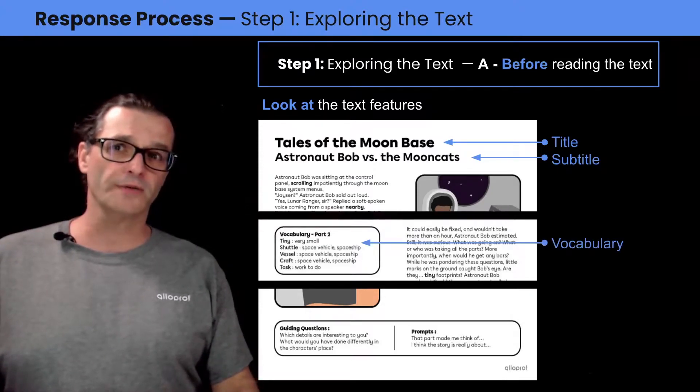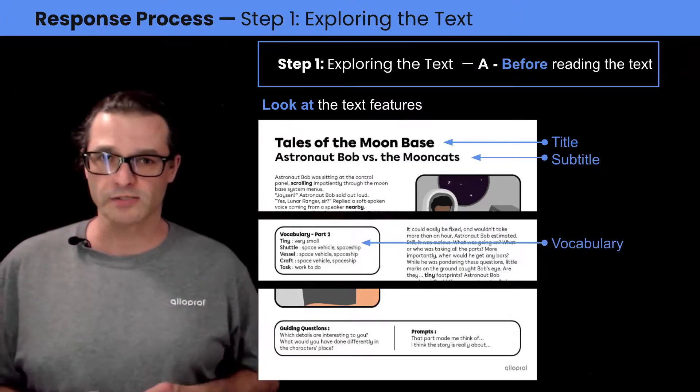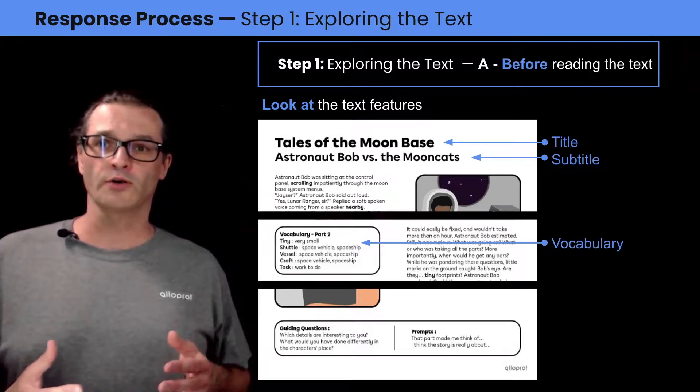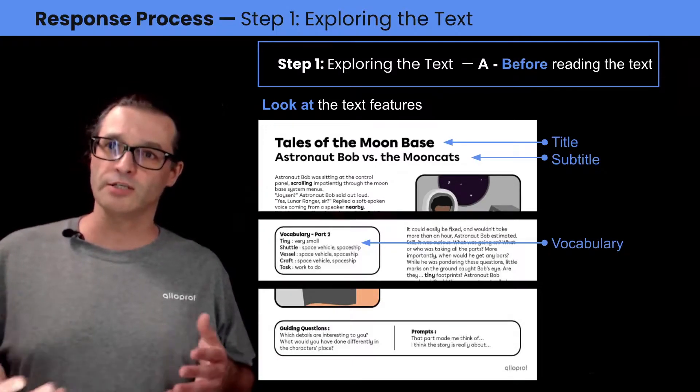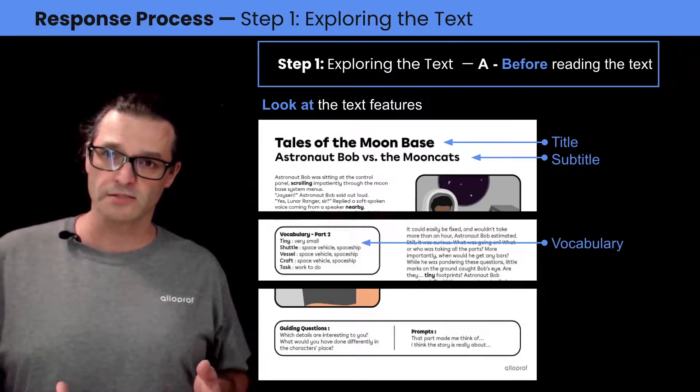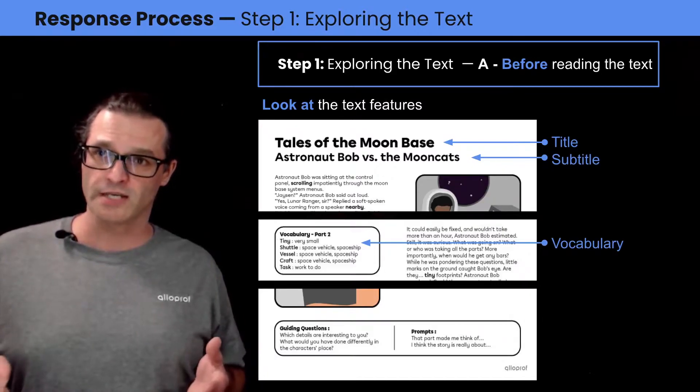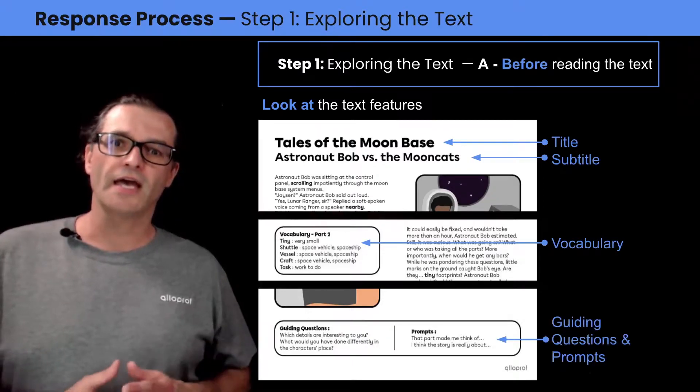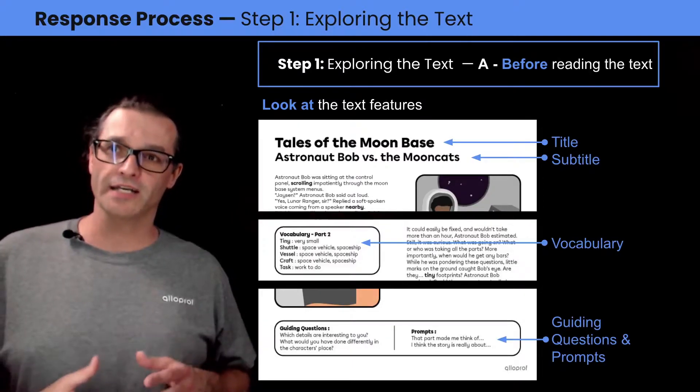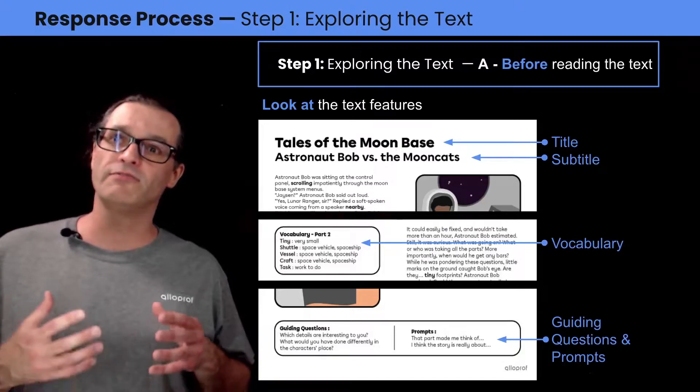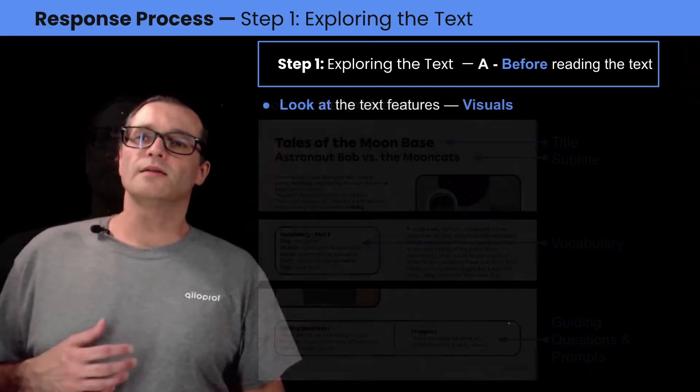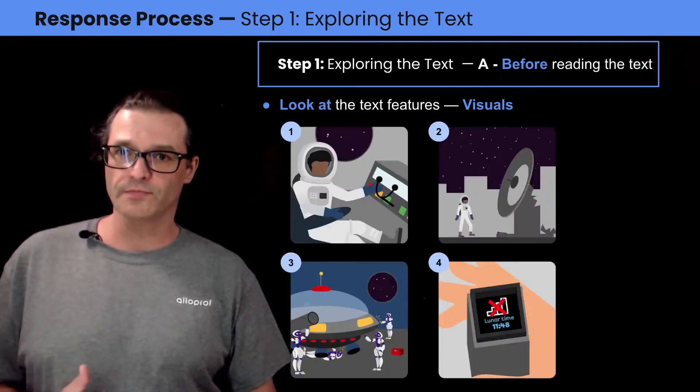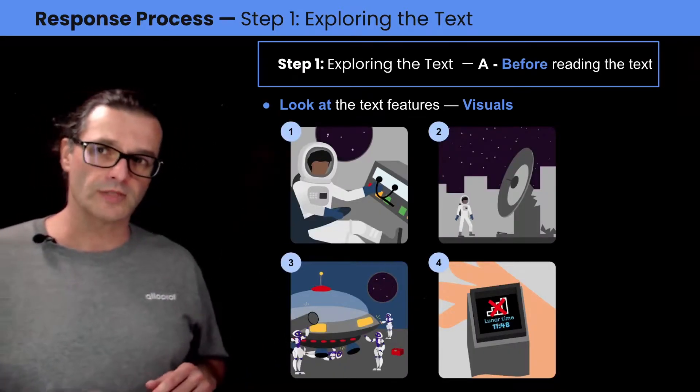Also in this story, we have vocabulary boxes. In these, you find words with their definition. Those words were picked out because they were either keywords or important words to the text, or maybe they were just tricky to understand. So they are definitely important. And there's also guiding questions and prompts to help focus your reading. This story also has visual text features. There's four images on it. Let's take a look at what they are.